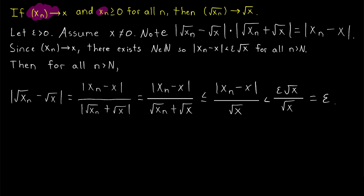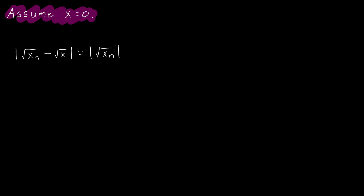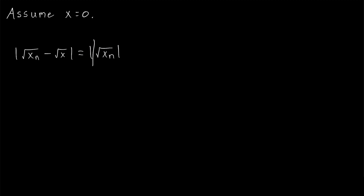So we've proven: if a sequence of non-negative numbers converges to a positive limit, then the square root of that sequence converges to the square root of that limit. Now we just need to take care of the case when x equals zero. We assume x equals zero and work with the same arbitrary epsilon greater than zero. We're trying to show that the same expression — the distance between the square root of xn and the square root of x — is less than epsilon, except now the square root of x is the square root of zero, which is zero.